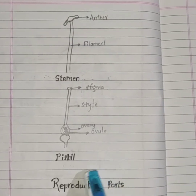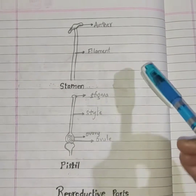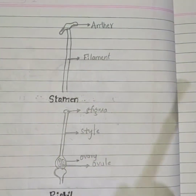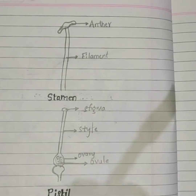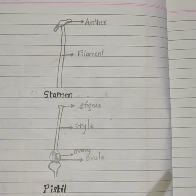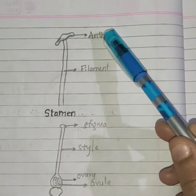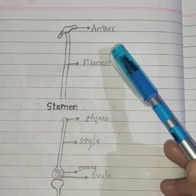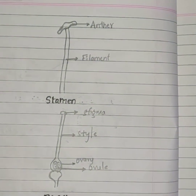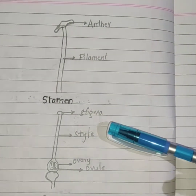The next diagram is the reproductive parts of a flower. First one: stamen. Stamen is the male reproductive part of a flower, whereas the pistil is the female reproductive part of a flower. This stamen consists of anther and filament. You can see this is the anther and this is the filament. Whereas this pistil consists of stigma and style.